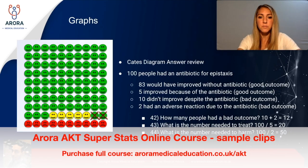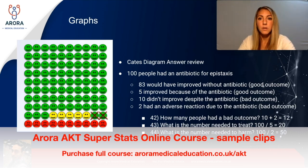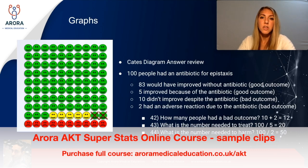Looking back at the question: 100 people had an antibiotic for epistaxis. 83 would have gotten better irrespective of the antibiotic — these are the green smileys. Five improved because of the antibiotic itself — the yellow smiley faces. Ten didn't improve despite the antibiotic — the reds. And two had their nosebleed stop but developed a rash from the antibiotic, so they had an adverse reaction — these are the greens with crosses.